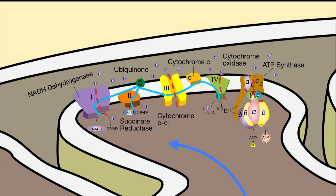Overall, the process leads to the formation of 30 to 34 molecules of ATP for each glucose molecule. The maximum amount of ATP is rarely produced because hydrogen ions, NADH, and FADH2 are used in other cellular processes as well.